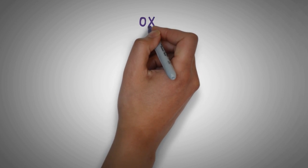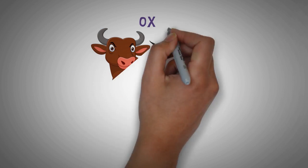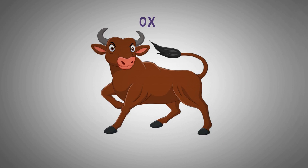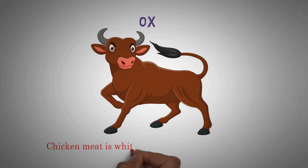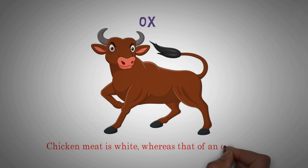Ox. Chicken meat is white, whereas that of an ox is red.